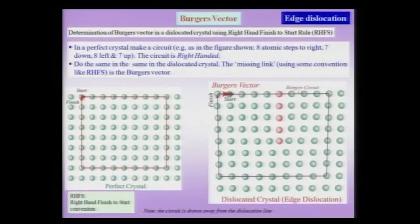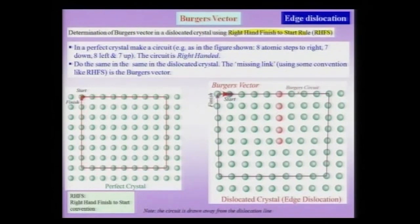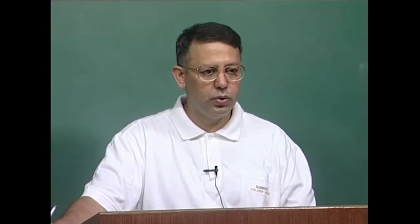Let us start with the Burgers vector of an edge dislocation. If you already have a dislocation, you can determine the Burgers vector using what is known as the Burgers circuit. The Burgers circuit, associated with the convention called the right-hand finish-to-start rule — written in shorthand as RHFS — can give us the Burgers vector. Even if it were a perfect crystal, crystallographically I can tell what the Burgers vector is, but if I already have a dislocation I can use the Burgers circuit to determine it.